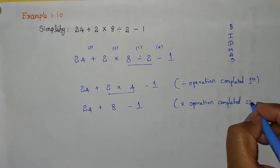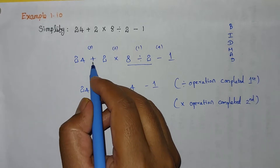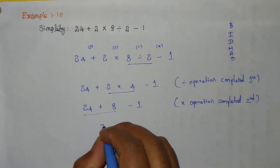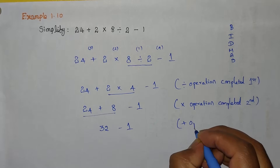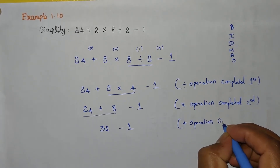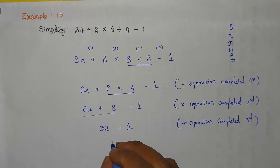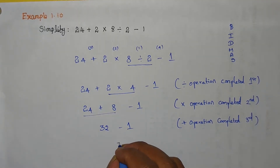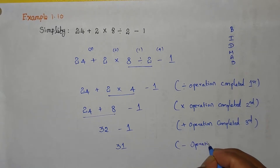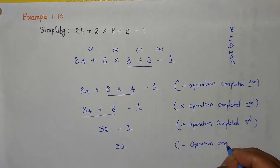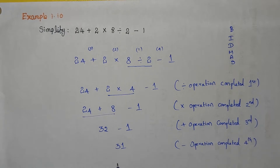Third, perform addition: 24 plus 8 equals 32, so we have 32 minus 1. Addition operation completed. Finally, perform subtraction: 32 minus 1 equals 31. Subtraction operation completed. So this is how we need to resolve an expression.